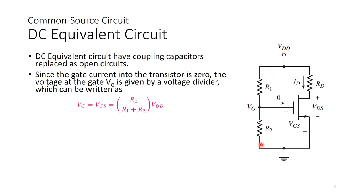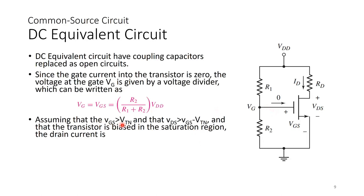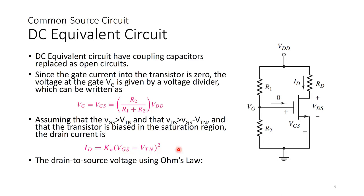VG in this case equals VGS because VS is zero. Assuming that VGS is greater than VTN (threshold voltage), and that VDS is also greater than VGS minus VTN (which is VDS_sat), and that the transistor is biased in the saturation region, the drain current is given by the saturation expression. If VGS is greater than VTN but VDS is not greater than VDS_sat, then we'll have to find the drain current using the triode expression.